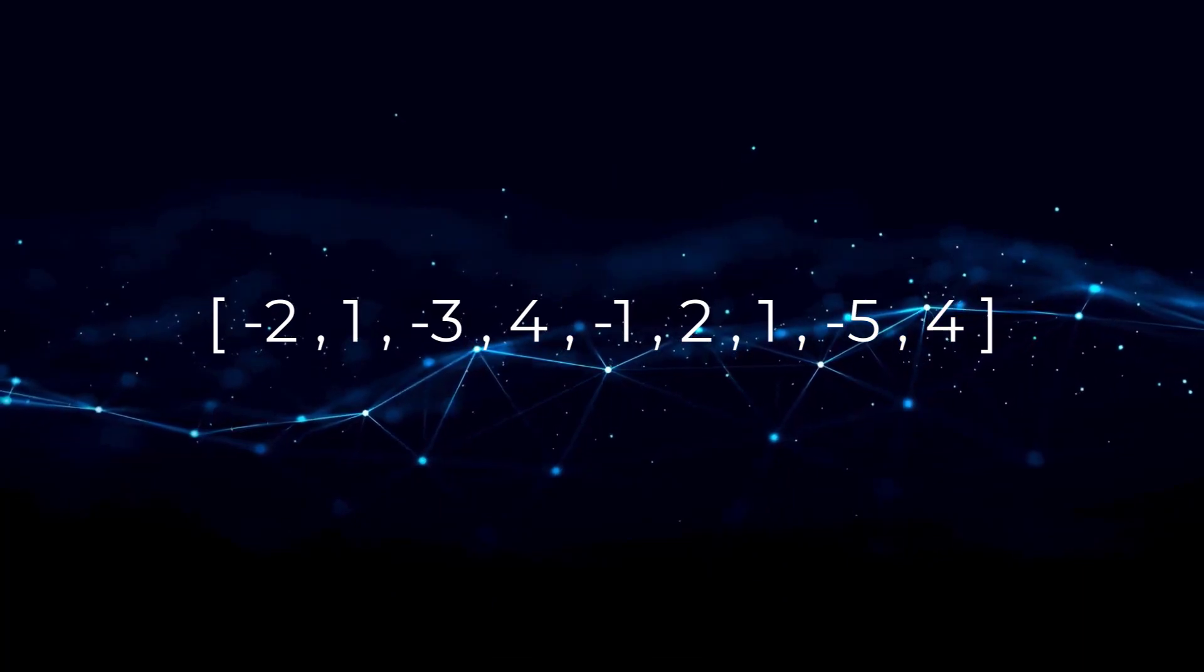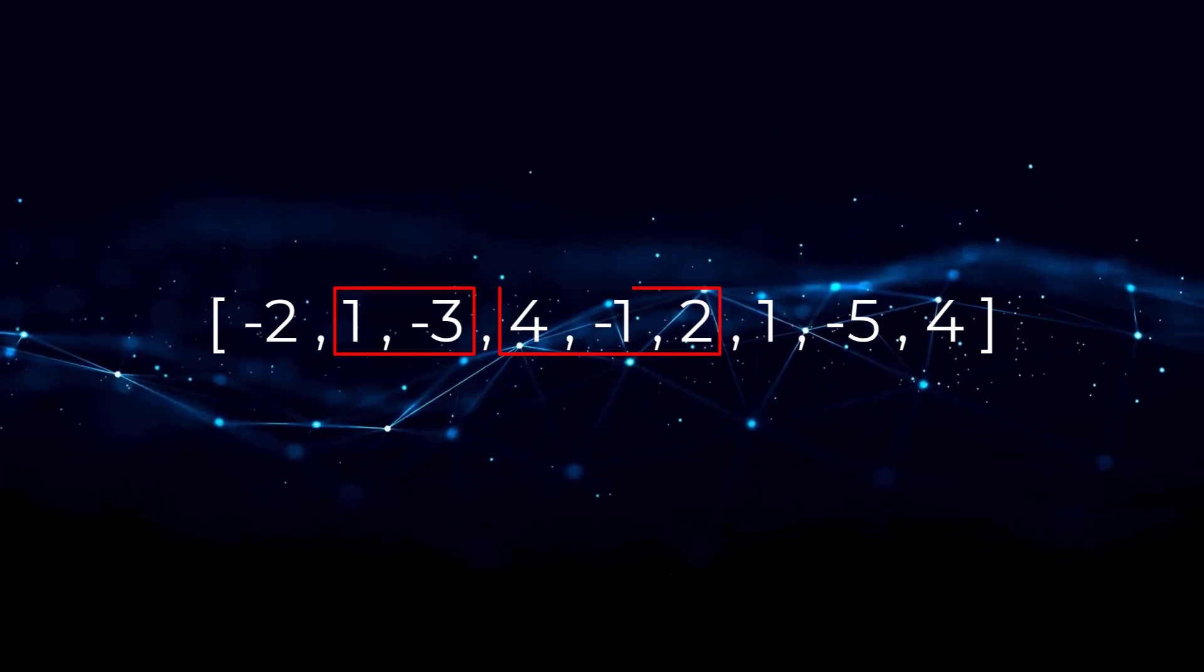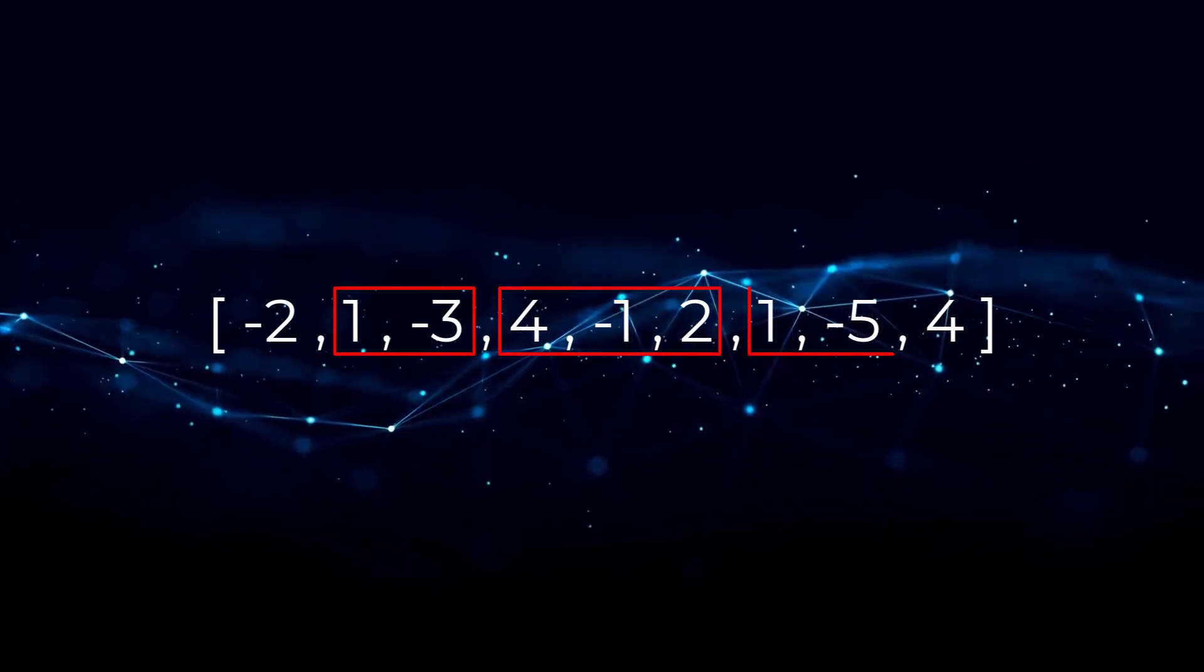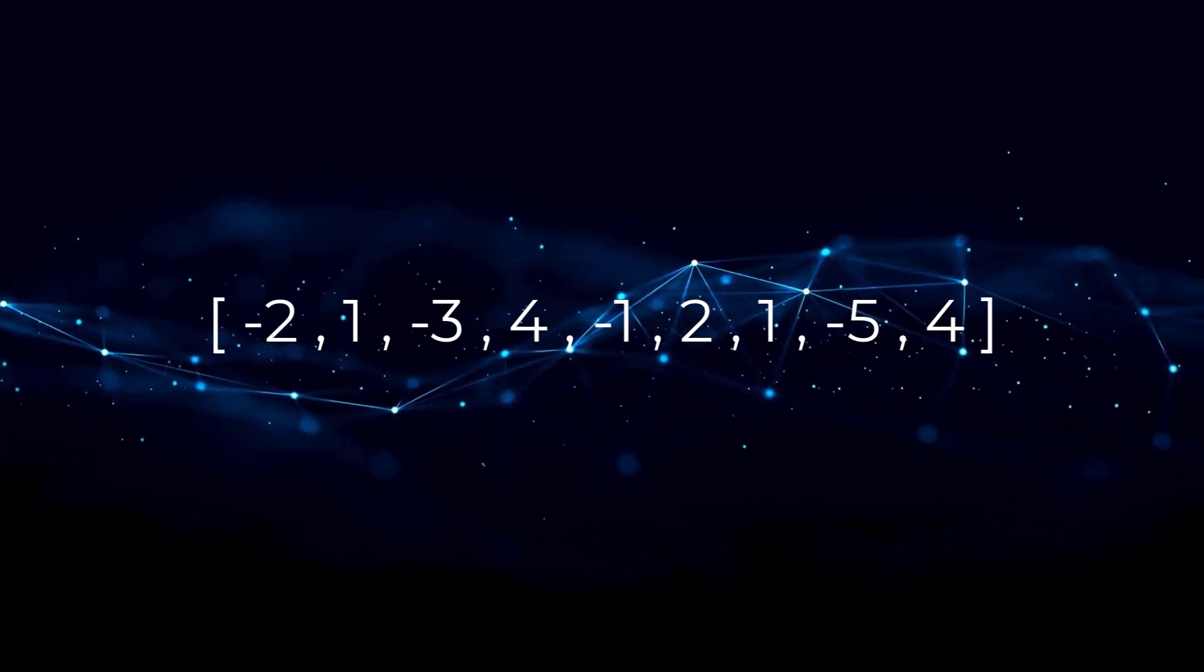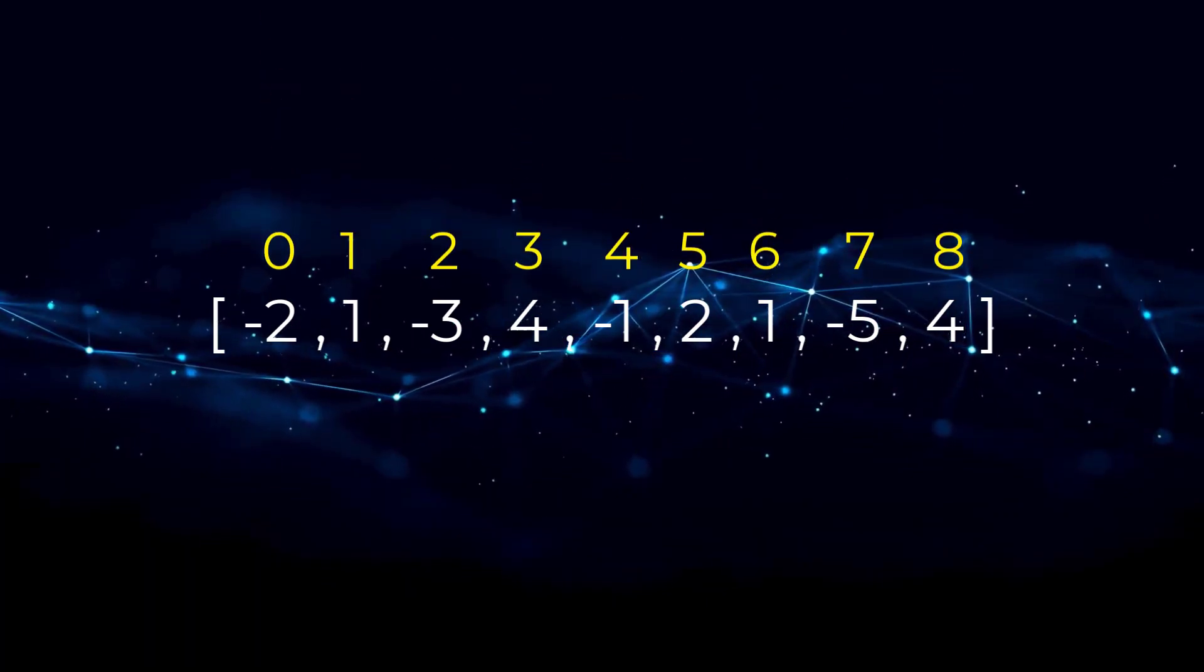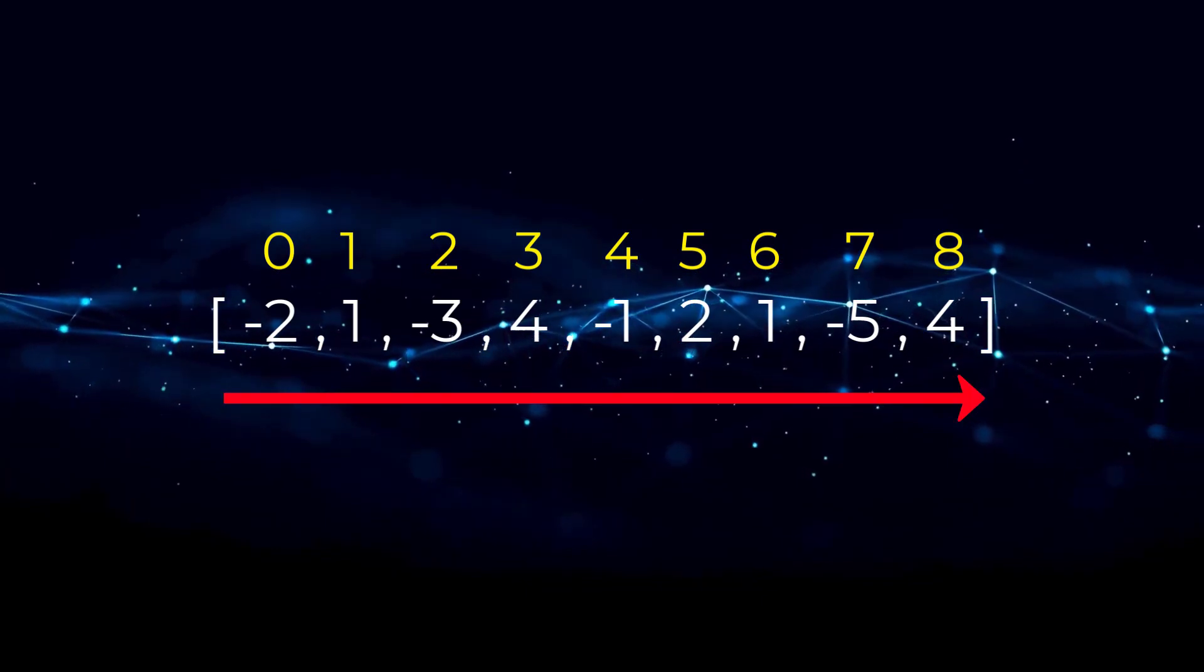Say we have the following array. Some examples would be 1, negative 3, 4, negative 1, 2, 1, negative 5, 4, or it could be the whole array itself. Essentially, all it means is all of the elements in the subarray have consecutive indexes.